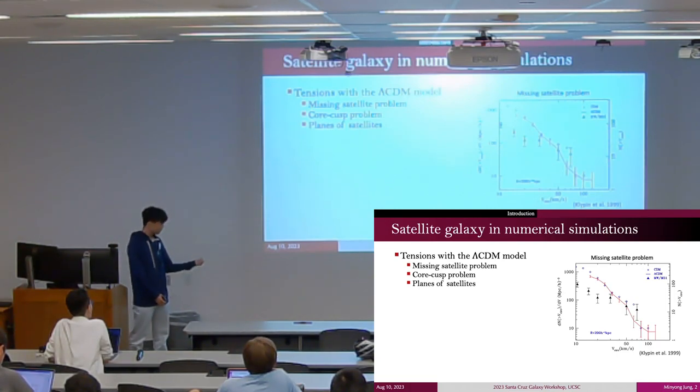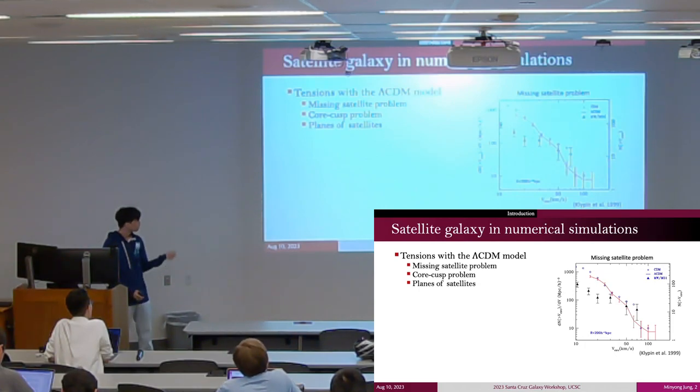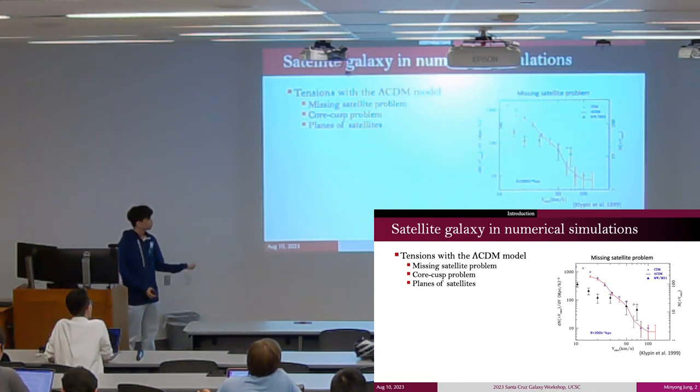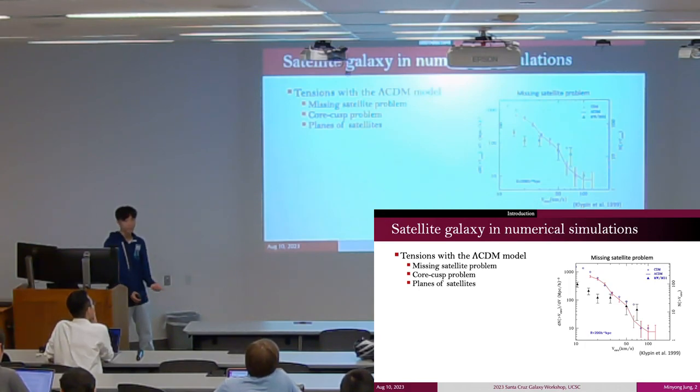By simply counting the number of satellite galaxies, discrepancies in their abundance has arisen with the prediction of N-body simulations. This famous problem is called the missing satellite problem.